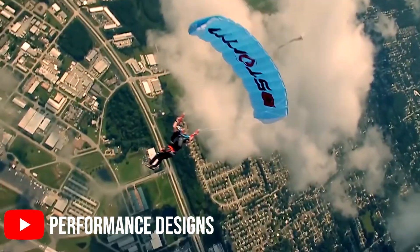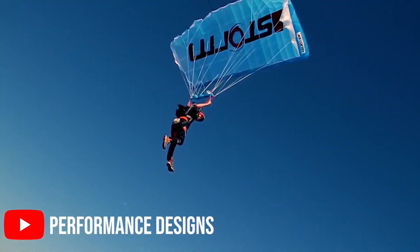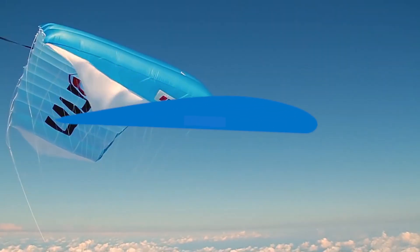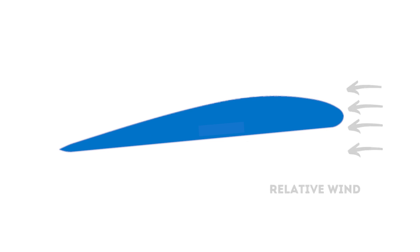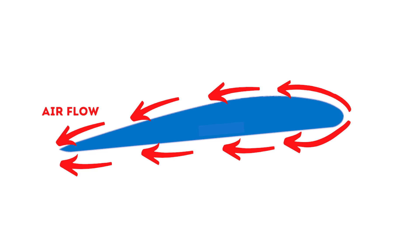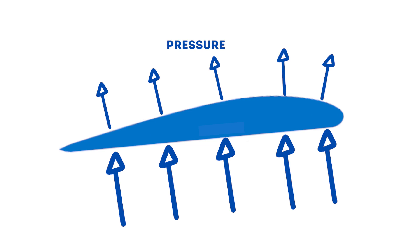Since I'm an engineer, let's talk physics. First, let's talk about how a canopy flies. You'll notice it has the shape of a plane wing. When you place it into the relative wind, the airflow will follow its shape. The airflow on top will tend to go faster than the airflow on the bottom, resulting in less pressure on top and more pressure on the bottom — this is how you get the lift force.